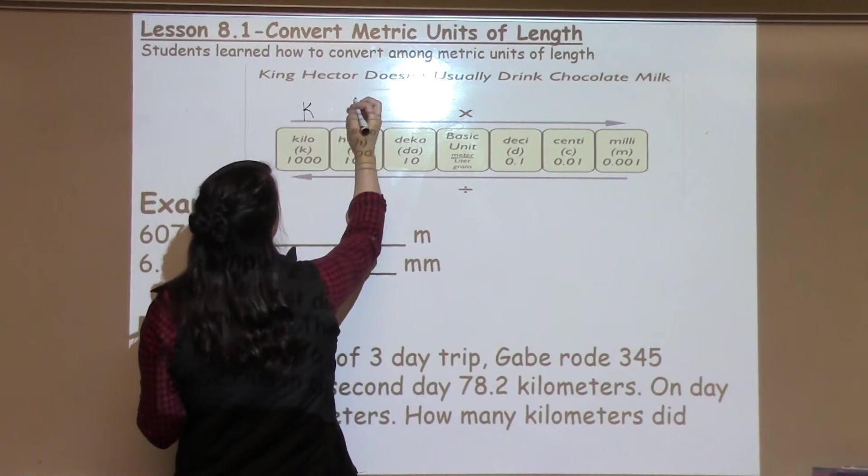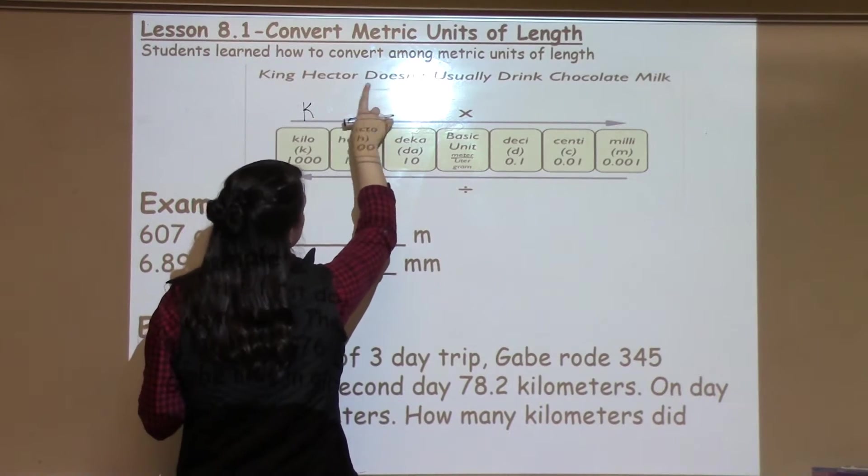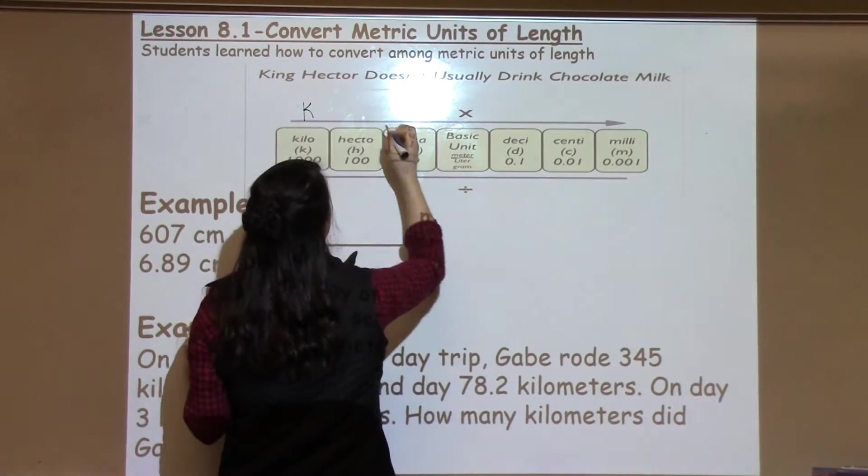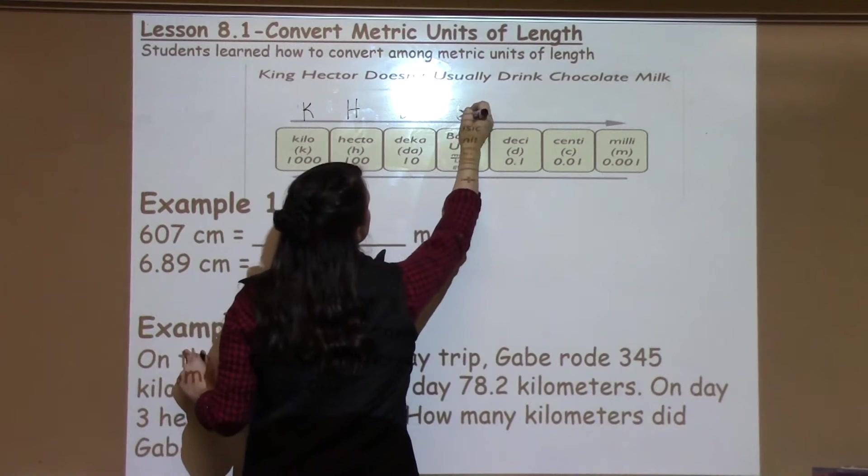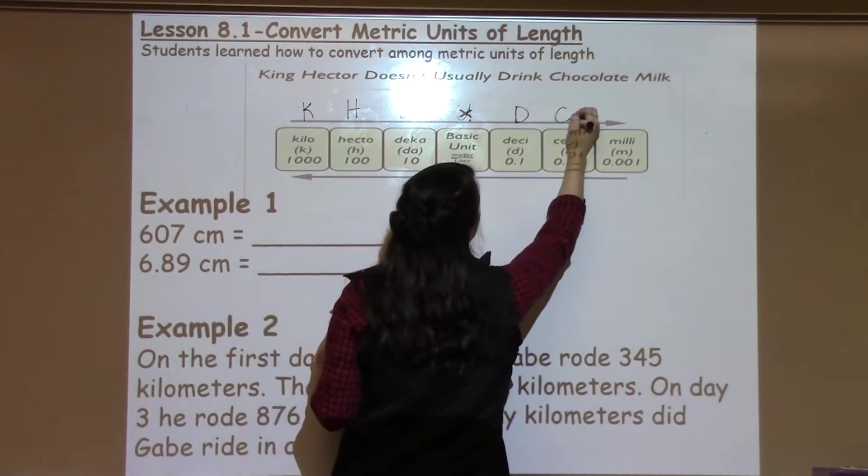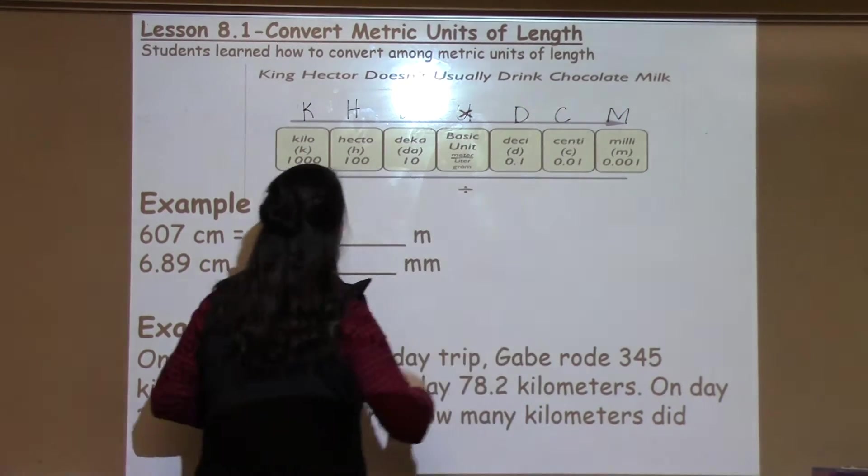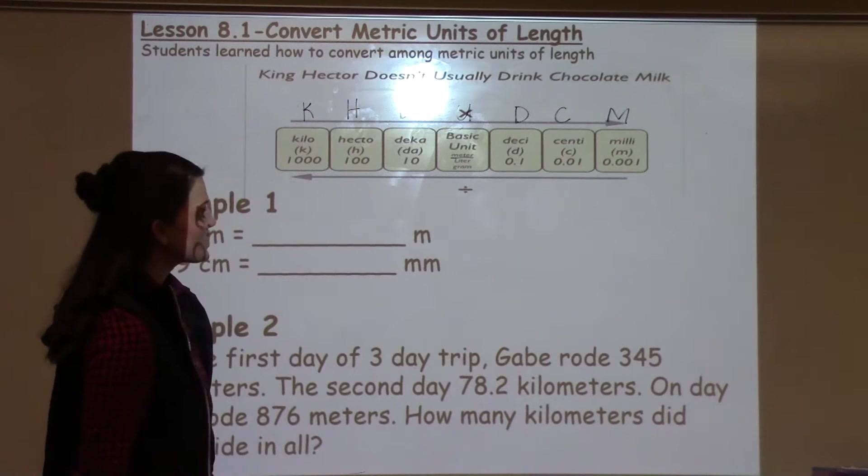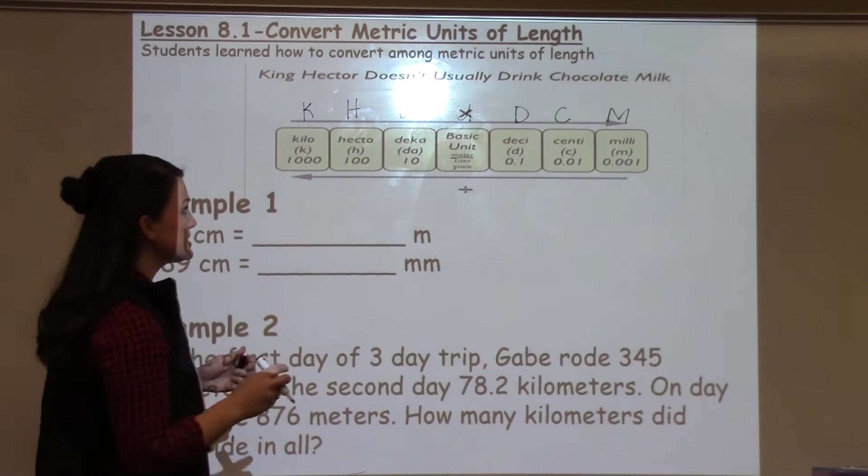So they used the mnemonic device King Hector or Henry doesn't usually drink chocolate milk, and we have them use that to help them convert between different units of length in order to find different equations and solve problems.